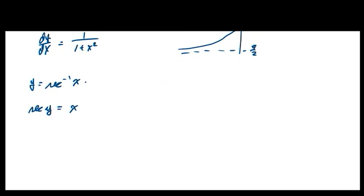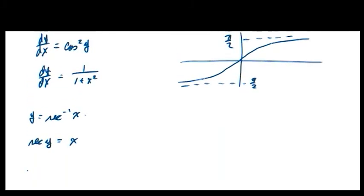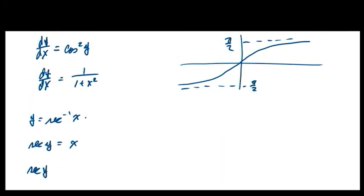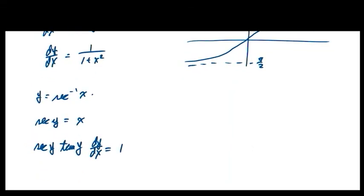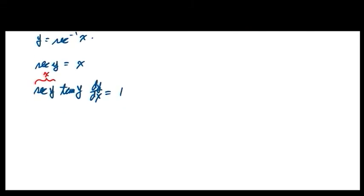The derivative of secant is secant times tangent. You have to know how to derive this. So sec(y)·tan(y) · dy/dx = 1, giving dy/dx = 1/(sec(y)·tan(y)). Since sec(y) = x, we have dy/dx = 1/(x · tan(y)). So we still need to figure out tan(y) from the triangle.